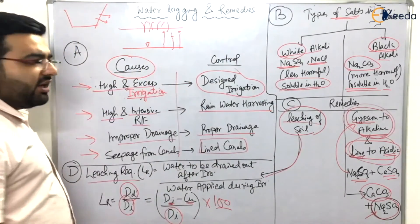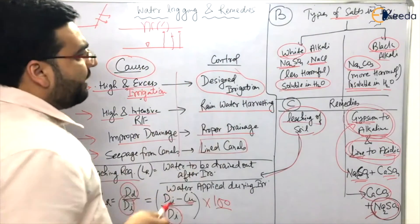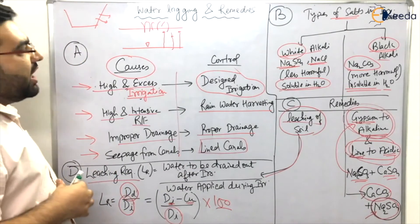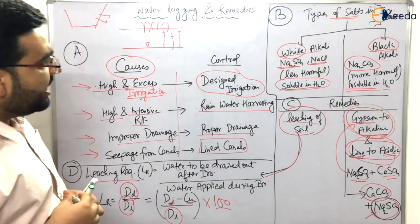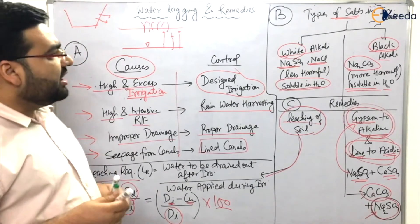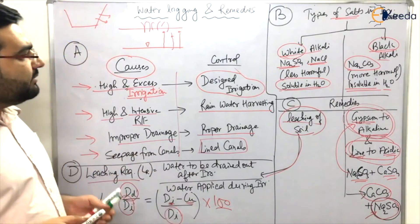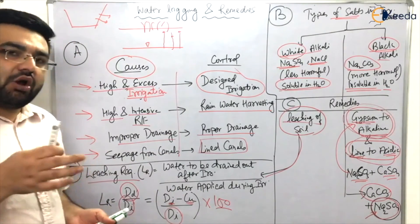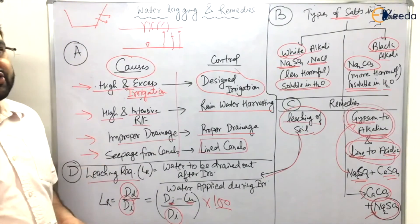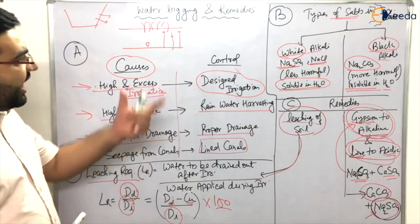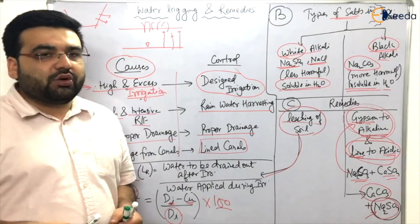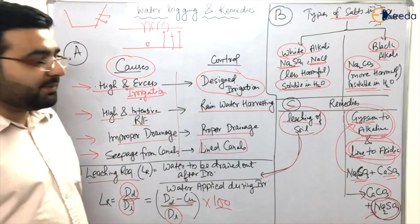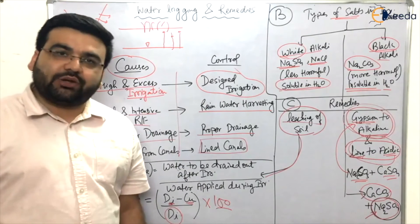Now let's move forward to other topics — gravity dams, spillways, and cross drainage works — to finish this chapter on the design of irrigation channels, dams, and spillways.